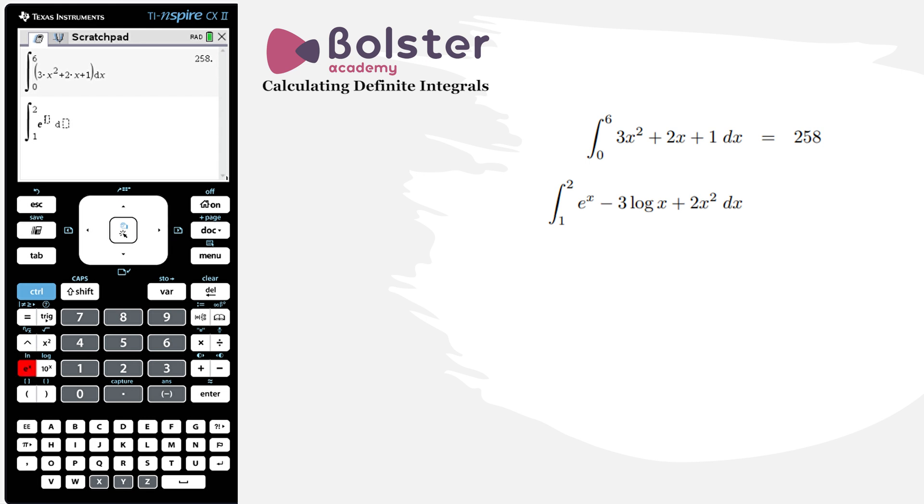We've got e to the power of x, right arrow to get out of that power, minus 3 times log. Now log is control 10 to the x. You can see it in blue. Now a log is base 10. So here in the calculator we need to put in the base. So log to the base 10 of x plus 2x squared.